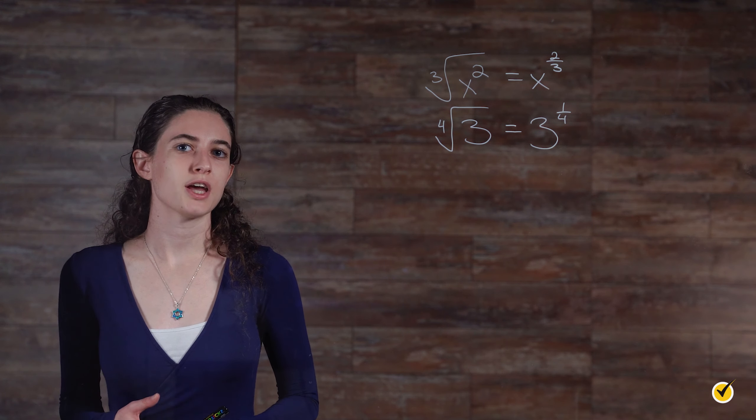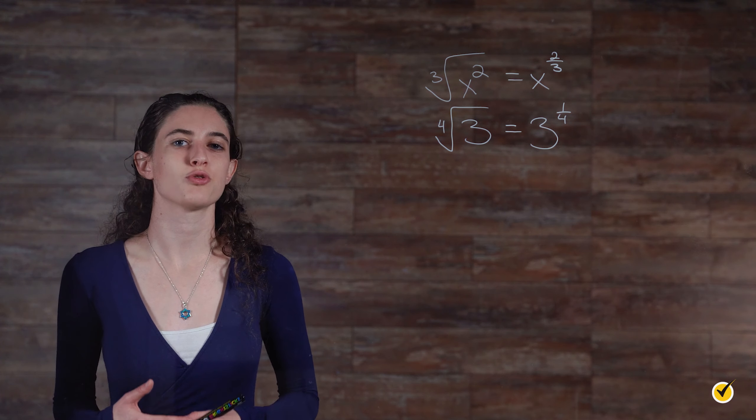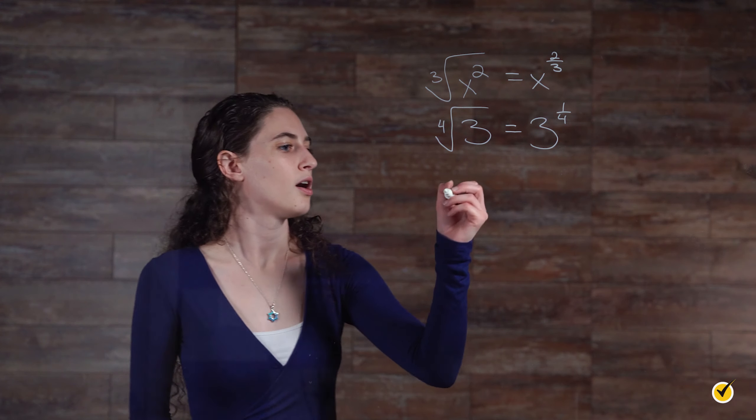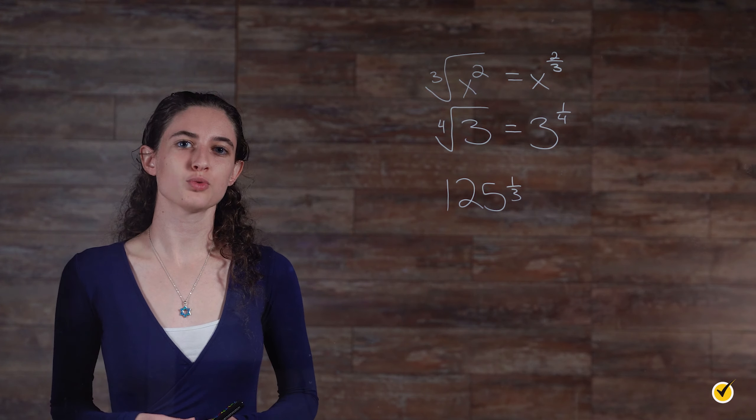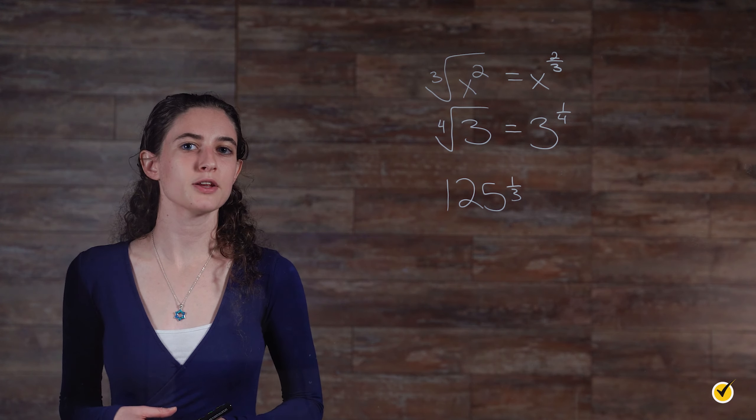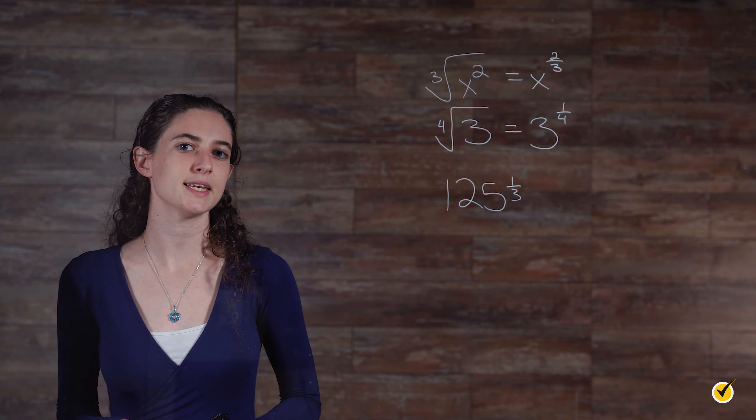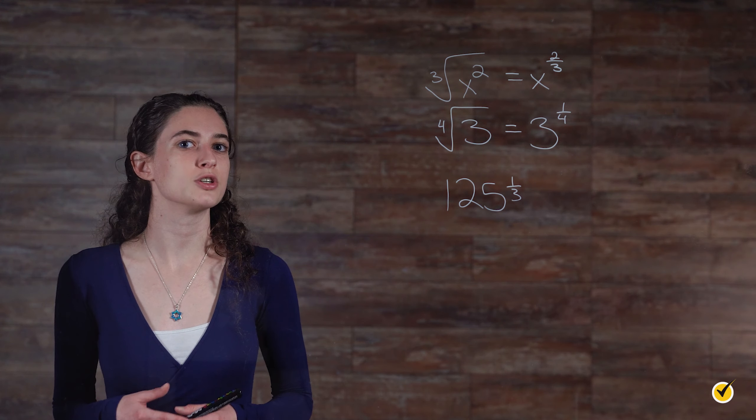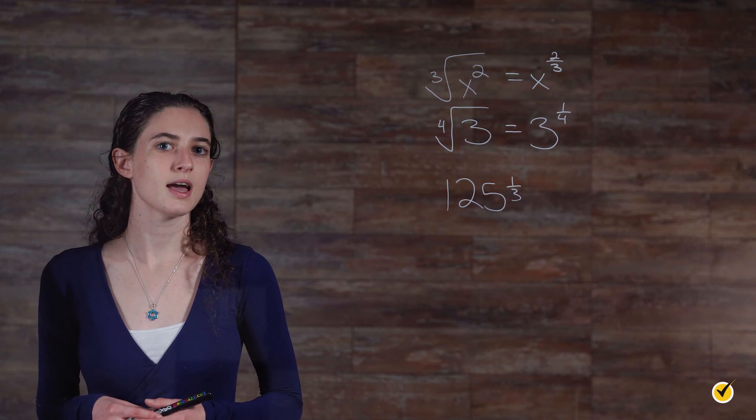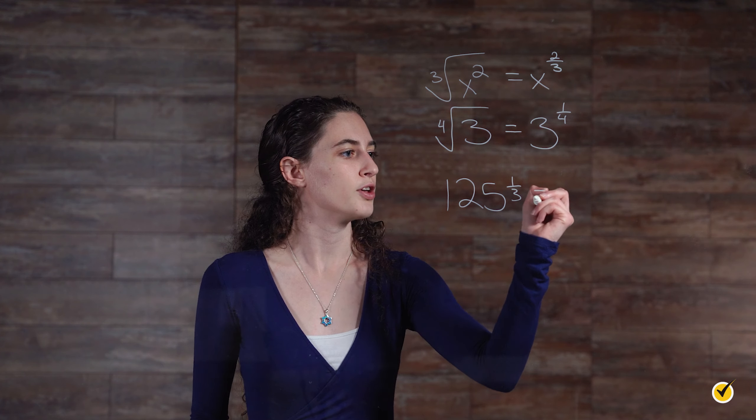Now let's flip things around and convert a fractional exponent to a radical. 125 to the one-third power. If we reverse what we were doing before, the denominator of the fractional exponent becomes the index of our radical. Since the numerator here is 1, we don't have an exponent for the radicand, and we end up with the cube root of 125.